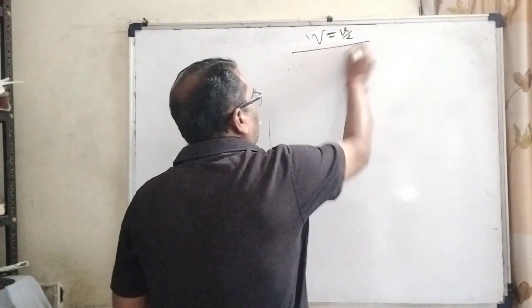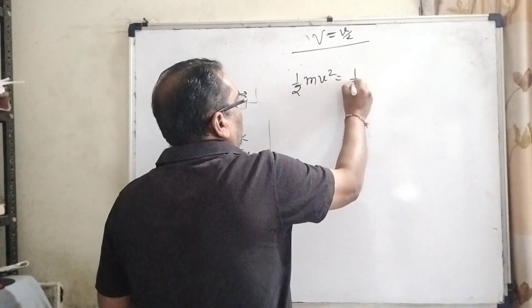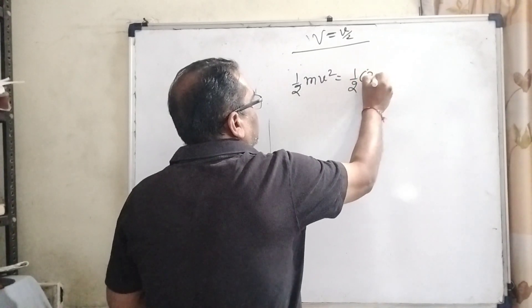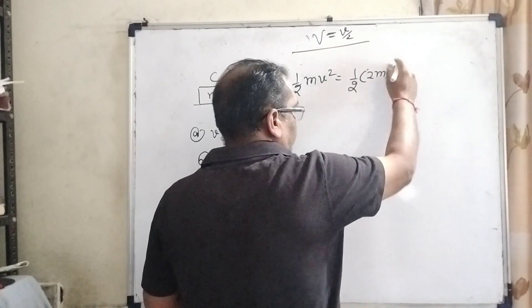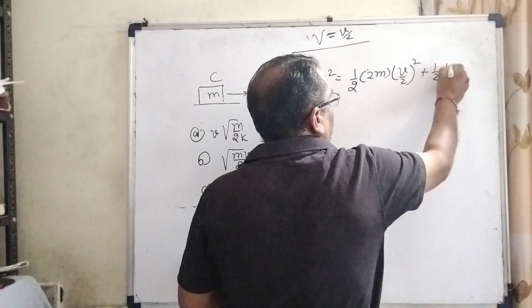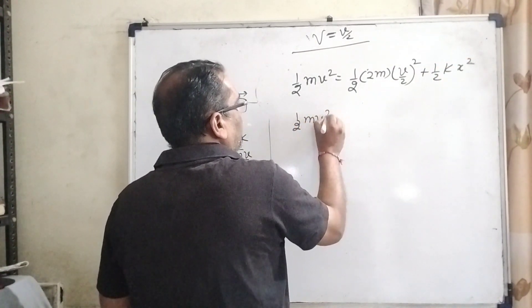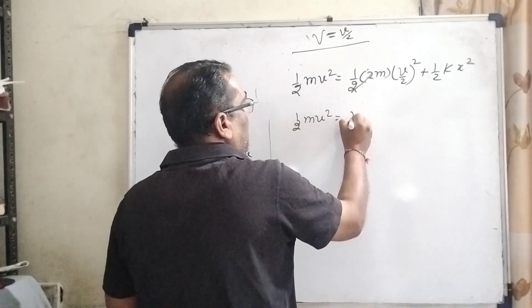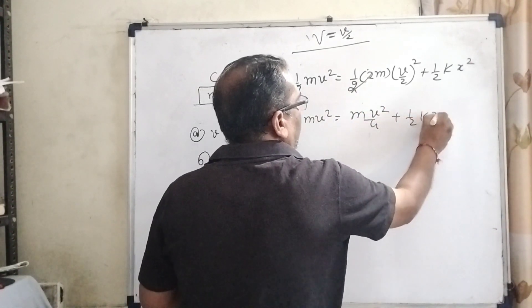Now substitute this value: ½mv² = ½(2m)(v/2)² + ½kx². Here ½mv² = 2 cancels out, giving mv²/4 + ½kx².